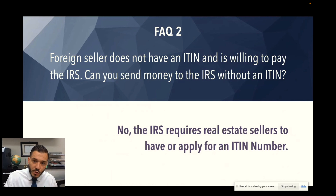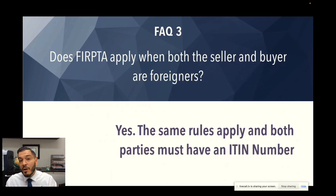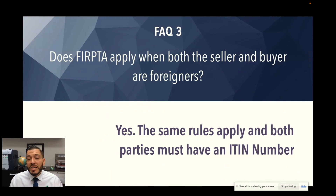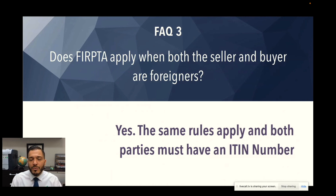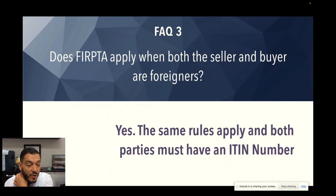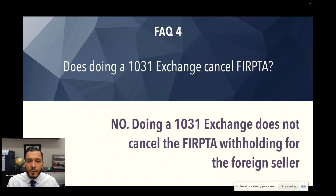If you're a foreign seller and you don't have an ITIN, we can help you apply for one. If you have an ITIN that may be expired, we can help you renew it as part of this process. Question three: does FIRPTA apply when both the seller and buyer are foreigners? Yes — it doesn't matter what the status of the buyer is. If the seller is a foreigner, FIRPTA applies, and it would be very important for both parties to have an ITIN number.